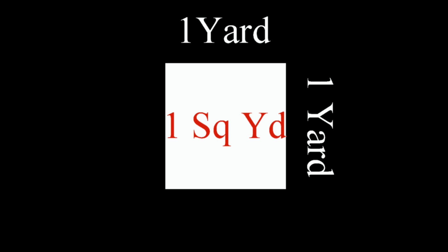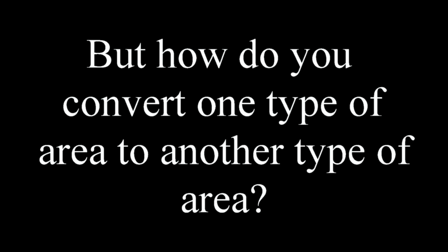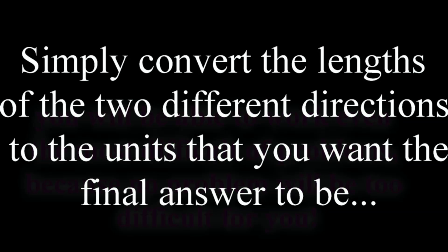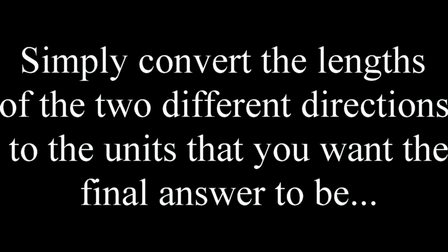One square yard is one yard by one yard. But how do you convert one type of area to another type of area? Once you know the trick, you will be able to work even the most difficult of problems. Simply convert the lengths of the two different directions to the units that you want your final answer to be.